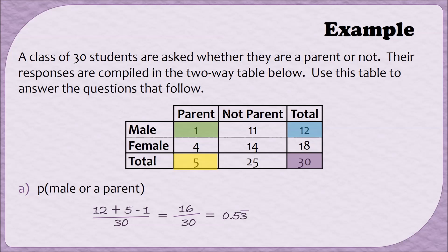This alternate method of finding the probability of male or parent is going to give us a formula that we can use. We can just take the total number of males plus the total number of parents minus the number of males who were parents. In other words we'll take the probability of men plus the probability of parents minus the probability of male and parent.